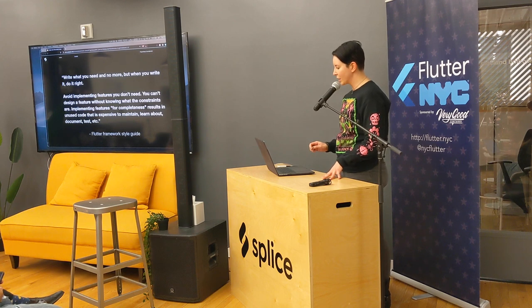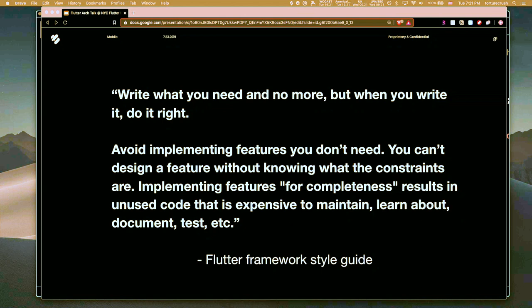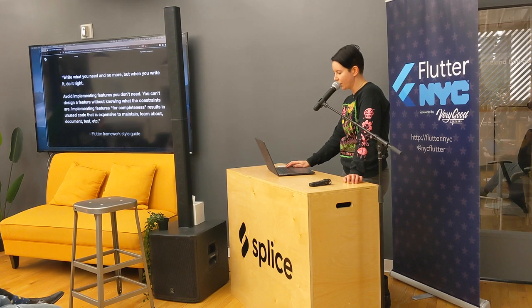This is something from the Flutter style guide, and I absolutely love it because it embodies the working principles we set up on the project: write what you need and no more, and when you write it, do it right. Avoid implementing features you don't need — you can't design a feature without knowing the constraints. If you implement a feature for completeness, the result is unused code that is expensive to maintain, learn about, document, and test. I really believe that in my heart of hearts.